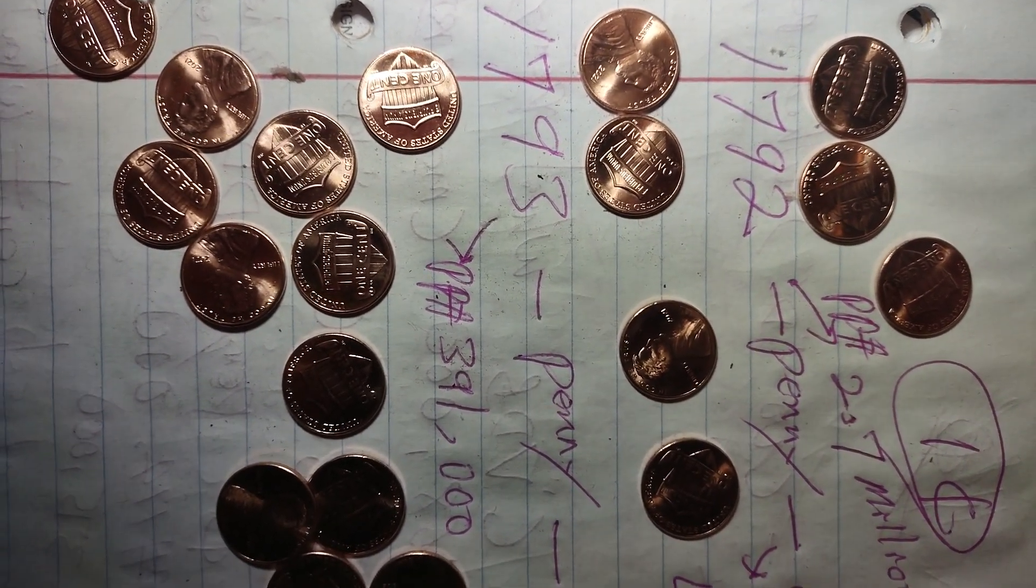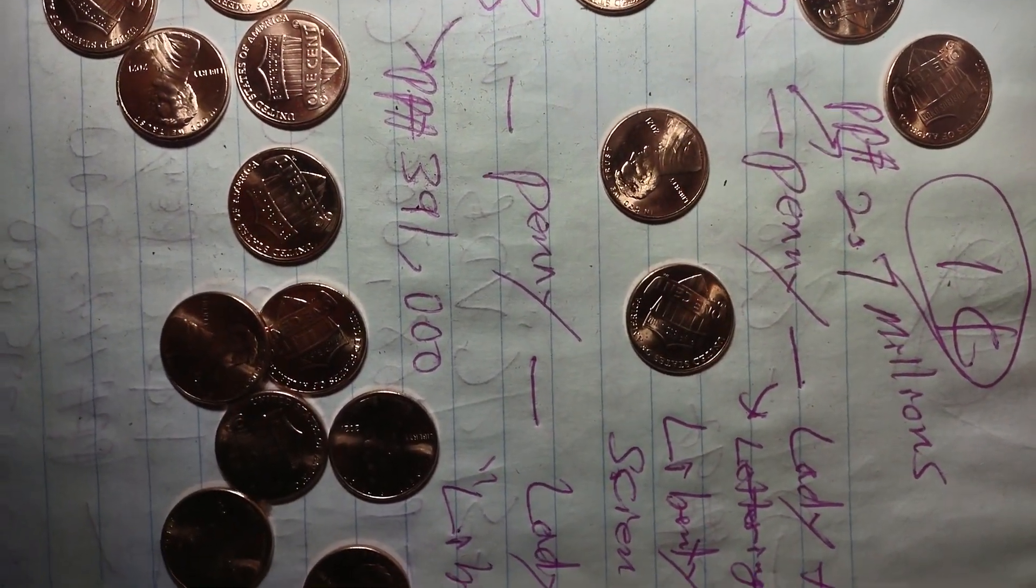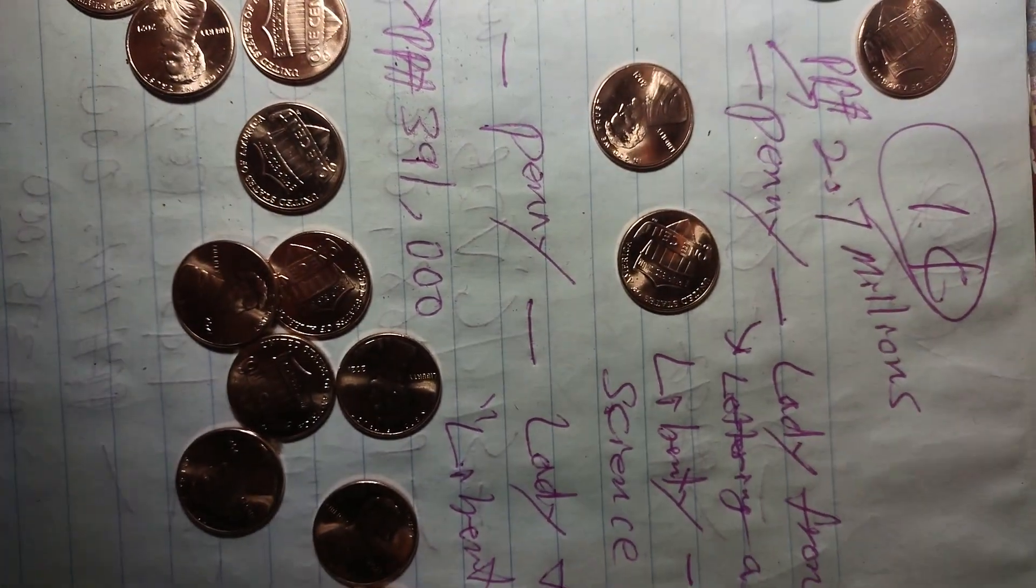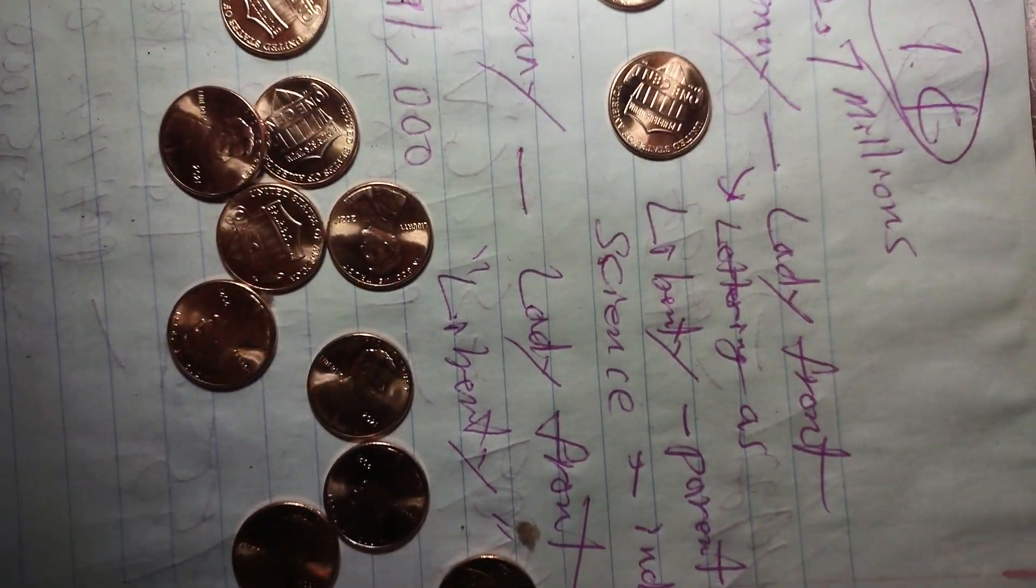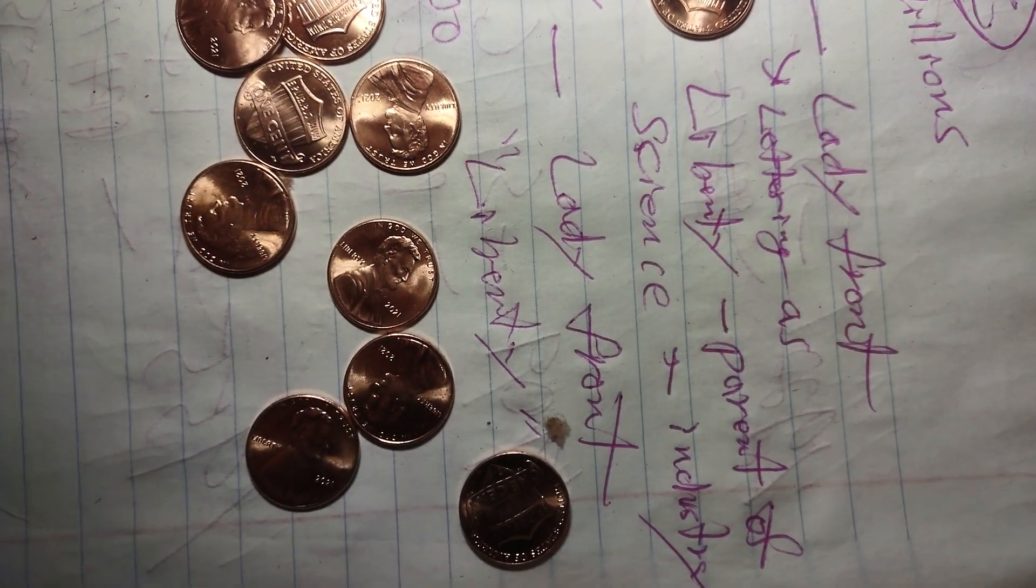This is a 1792 penny. This coin is selling for 2.7 million dollars. It has a lady with the letter edge Liberty, parents of science and industry.